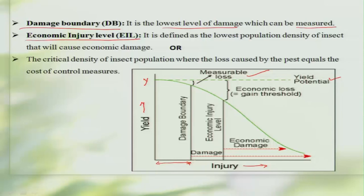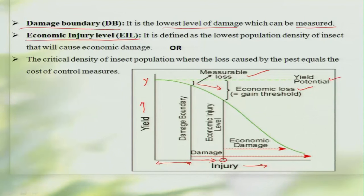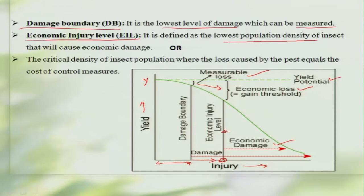However, if the damage continues and leads to a certain reduction in yield beyond which it causes an economic loss, the population which causes a significant economic yield loss is called the economic injury level. Economic injury level can be defined as the lowest population density of an insect which will cause an economic damage.